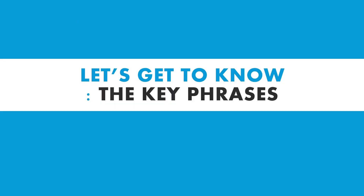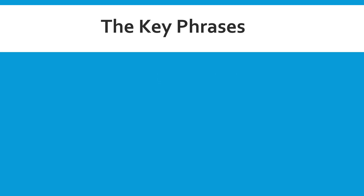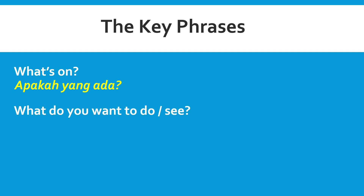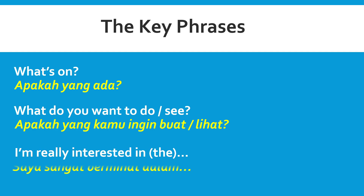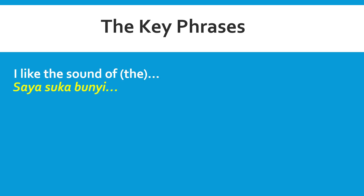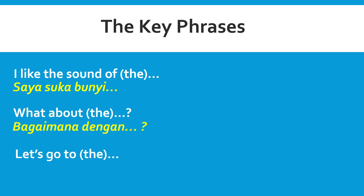Let's get to know the key phrases for today's lesson and I shall explain the meaning in BM. The first key phrase is 'What's on?' — in BM, 'apakah yang ada?' Next, 'What do you want to do or see?' — 'Apakah yang kamu ingin buat atau lihat?' 'I'm really interested in' — 'Saya sangat berminat dalam.' 'I like the sound of' — 'Saya suka bunyi.' 'What about?' — 'Bagaimana dengan?' And 'Let's go to' — 'Mari kita pergi.'